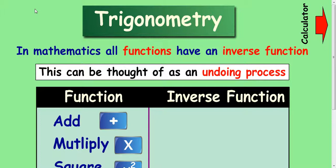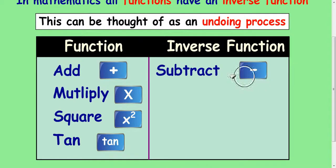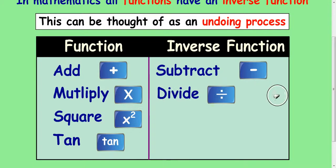An inverse function is an undoing process in mathematics. Most functions in maths have an undoing process. You meet this early on in primary school. The first undoing process is: if the function's adding, then the undoing process is take away or subtract, which is called the inverse function of adding. We also look at multiplying, and the inverse function of multiplying is dividing.